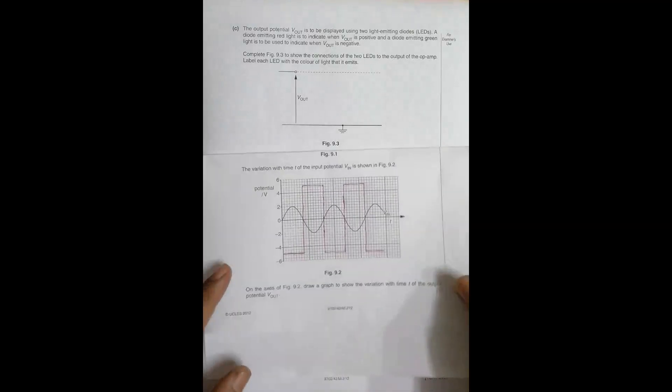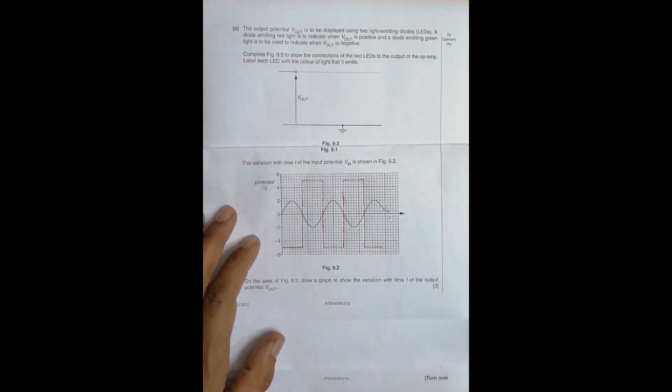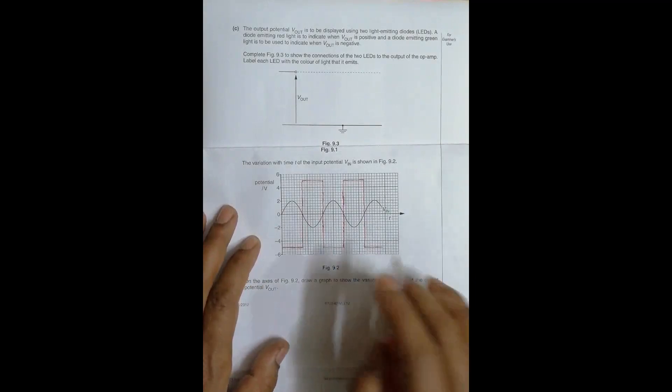The output potential V_out is to be displayed using two light-emitting diodes, LEDs. A diode emitting red light is to indicate that V_out is positive, and a diode emitting green light is used to indicate when V_out is negative.